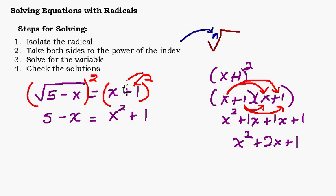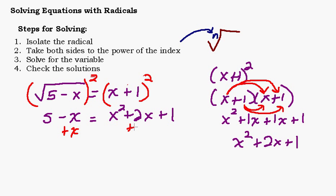So I'll erase that incorrect step. Step 3, solve for the variable. We now have 5 minus x equals x squared plus 2x plus 1. Because we have x squared, we need to set the equation equal to zero. Adding x and subtracting 5 from both sides gives 0 equals x squared plus 3x minus 4.